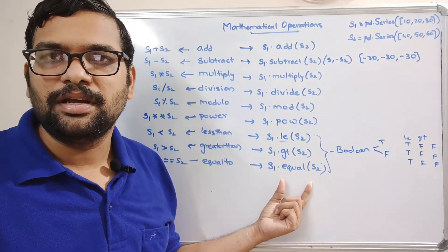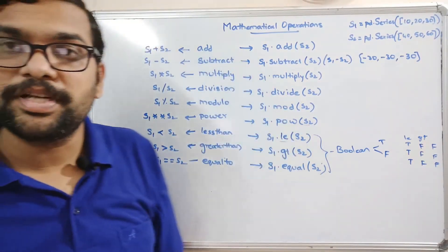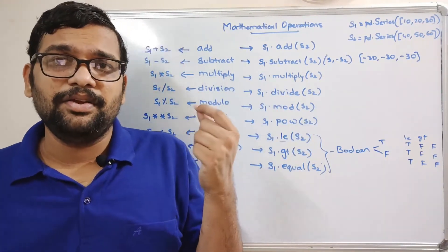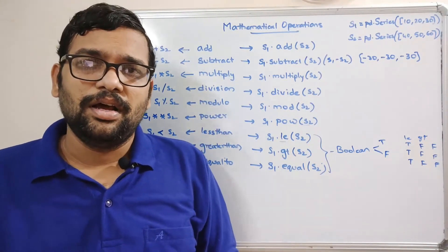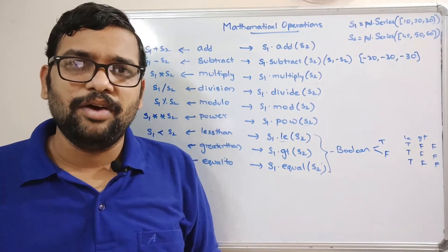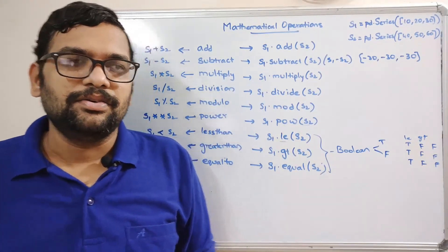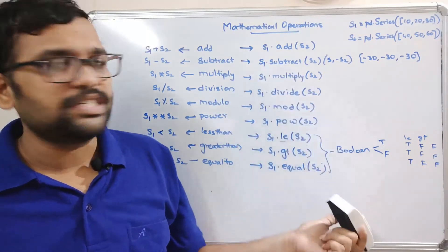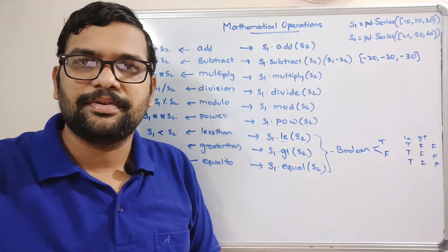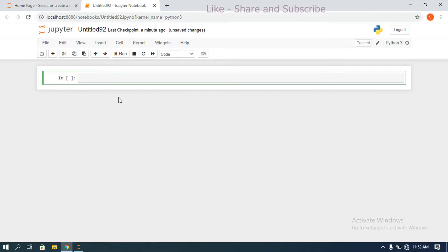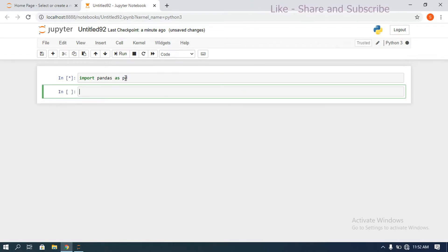So we can either use operators or functions to apply mathematical operations on a Series. To apply these operations, first we need to create the Series. If you don't know how, there is a session on different ways to create a Series. Now let's move to the interpreter and see the implementation one by one.